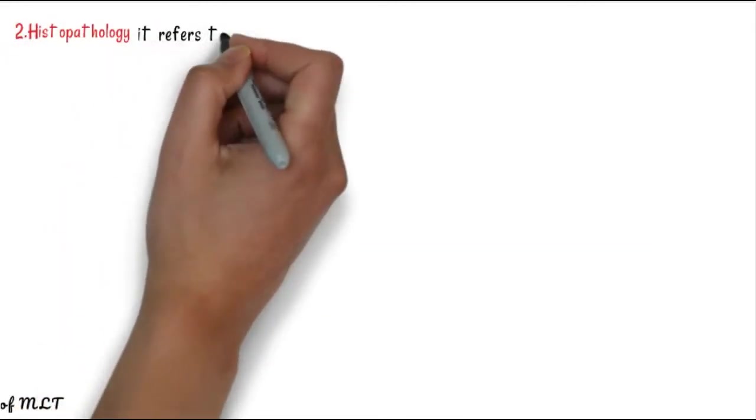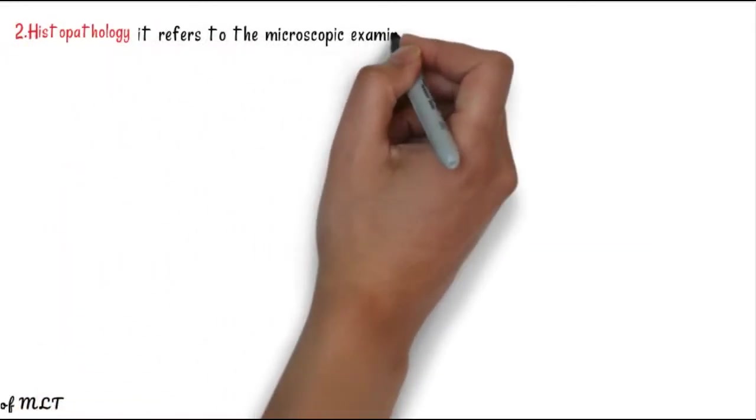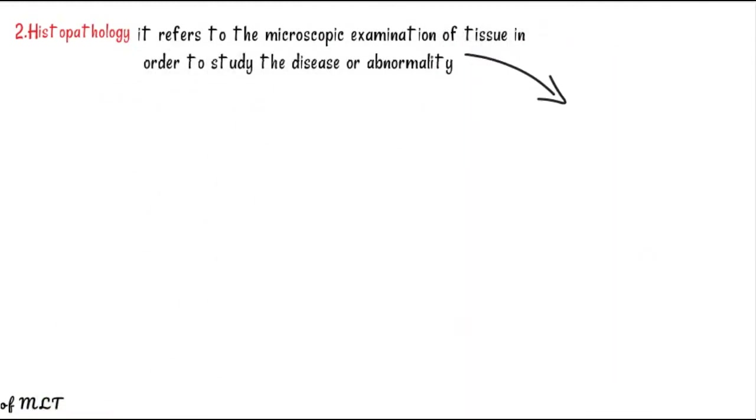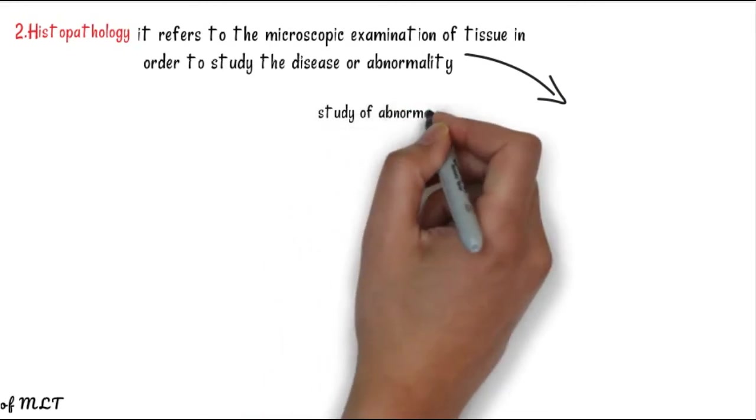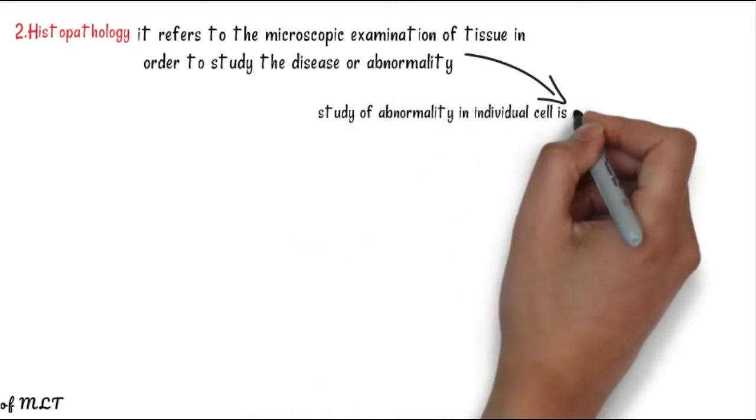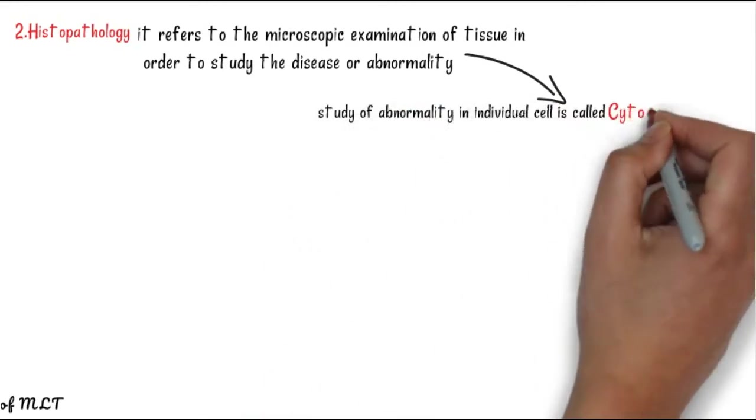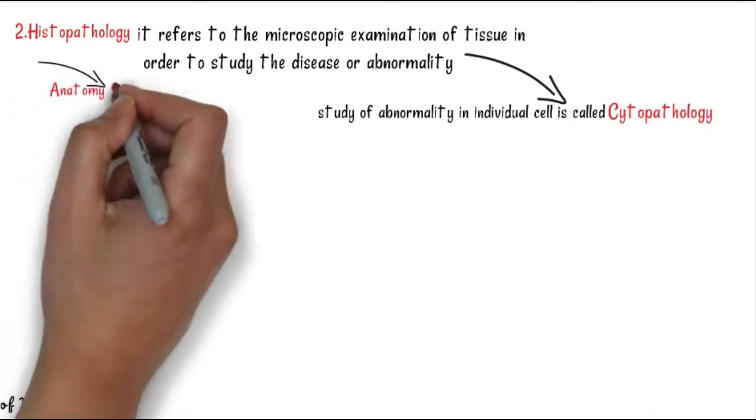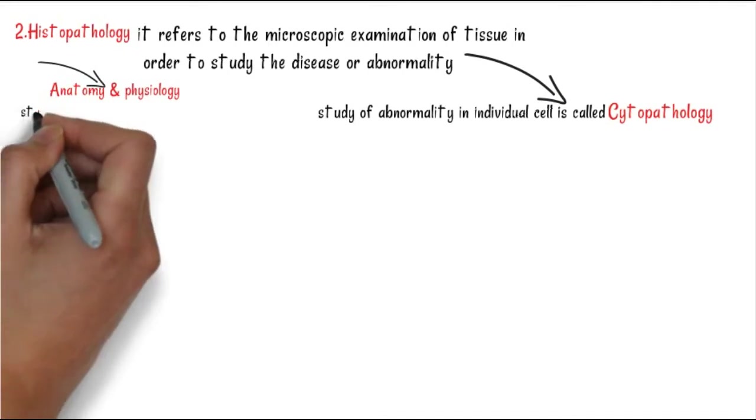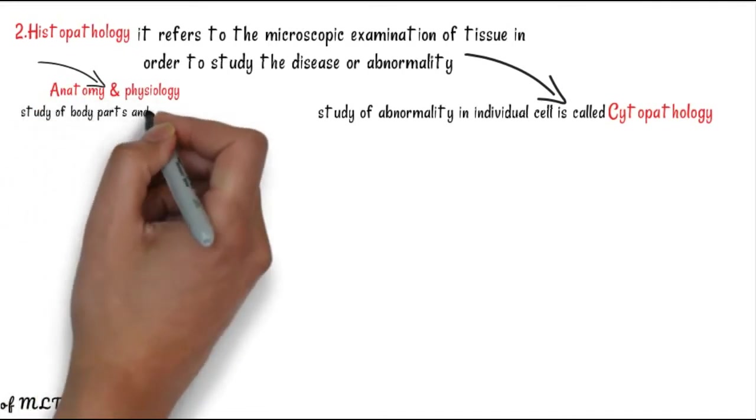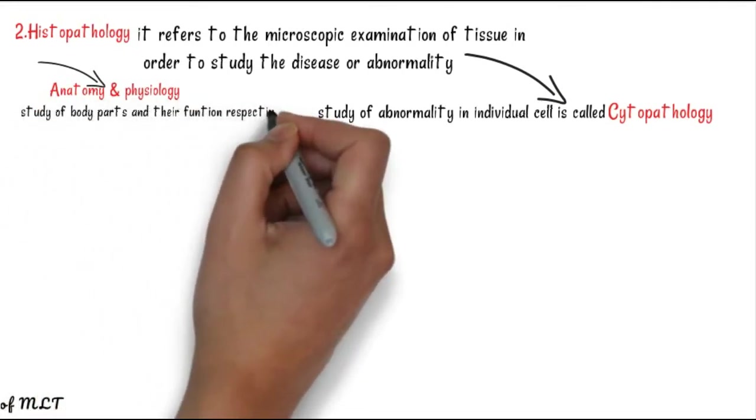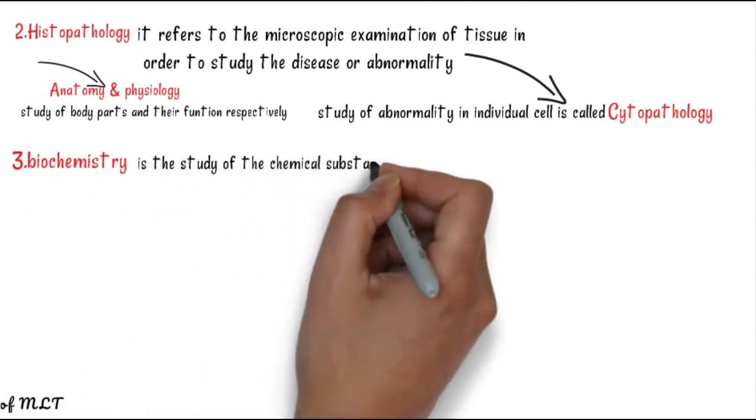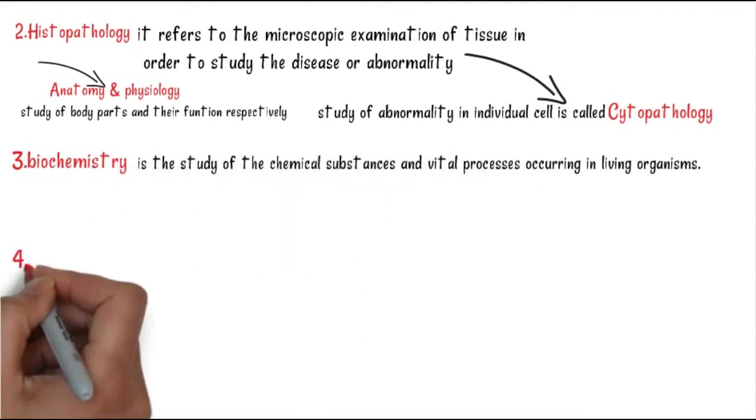Another term is histopathology - it refers to the microscopic examination of tissue in order to study disease or abnormality. Another term is cytopathology - the study of abnormality in individual cells. Anatomy and physiology: the study of body parts and their function respectively, known as anatomy and physiology.